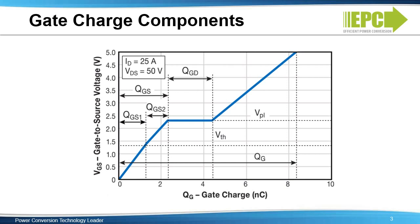To begin the discussion on the switching behavior of GAN transistors, we examined the various switching properties of the device. This plot shows the gate-to-source voltage on the vertical axis as a function of gate charge on the horizontal axis.